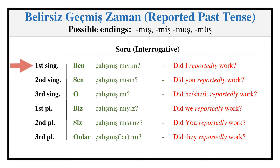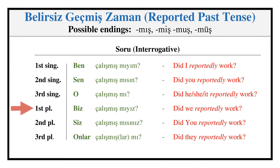Evidential Past — Interrogative: ÇALIŞMIŞ MIYIM, ÇALIŞMIŞ MISIN, ÇALIŞMIŞ MI, ÇALIŞMIŞ MIYIZ, ÇALIŞMIŞ MISINIZ, ÇALIŞMIŞLAR MI?